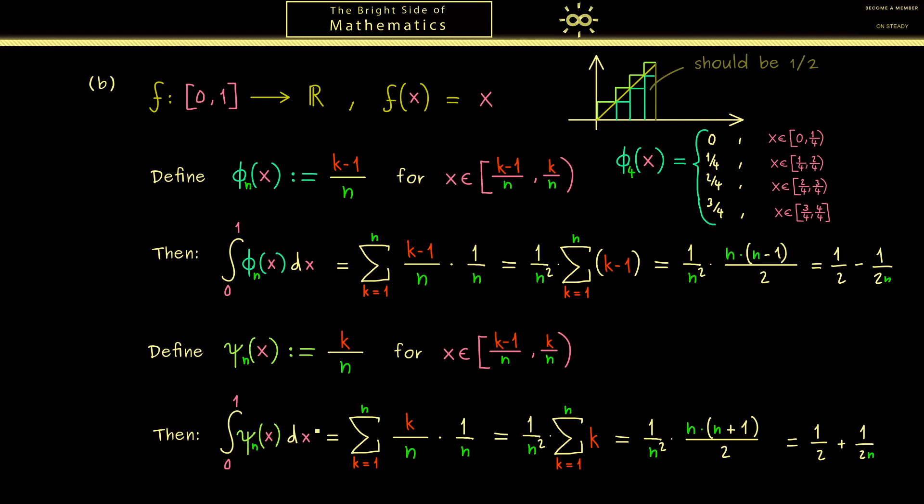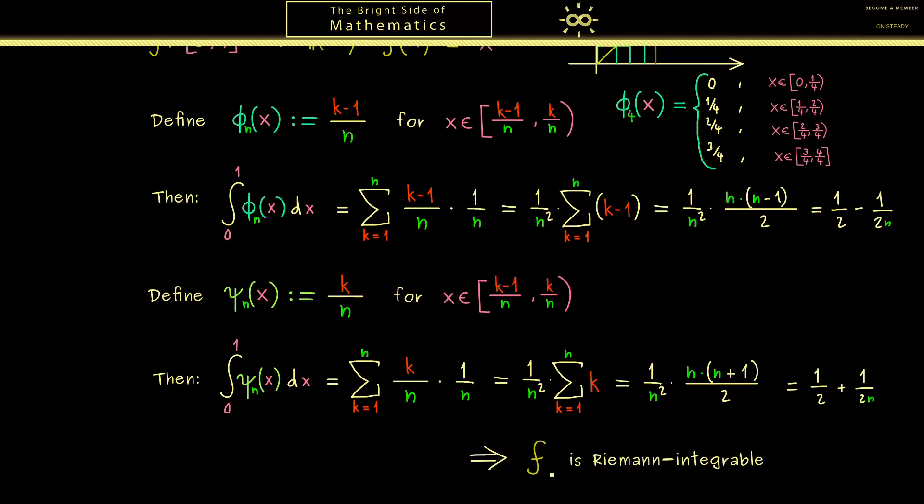Because the difference between these two integrals is exactly 1 divided by n. In other words we can make the difference as small as we want. So if you recall the epsilon criterion from above then you see that this function f is Riemann integrable. And of course this is our result here. Moreover we also get the value of the integral of f which is 1/2. Of course not a surprise for you but now we have proven it.